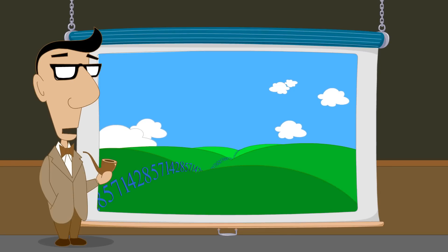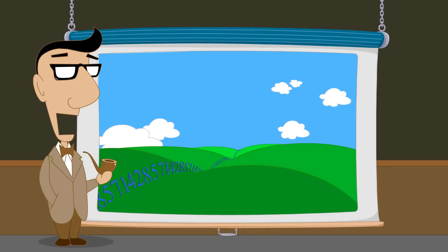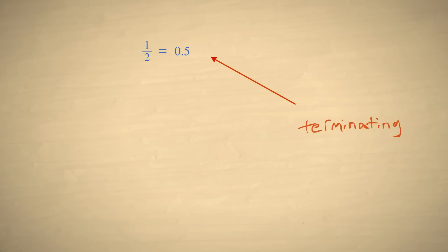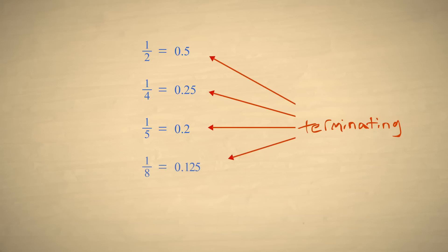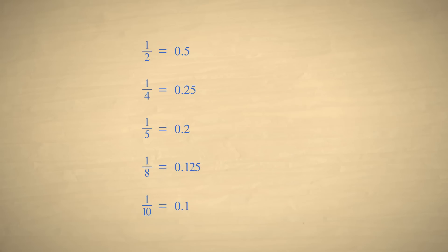Some unit fractions, when written in decimal form, can be represented with a finite number of digits, while others cannot. For instance, the fractions one-half, one-fourth, one-fifth, one-eighth, and one-tenth can be written with a finite number of digits.